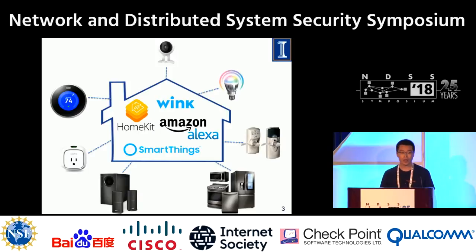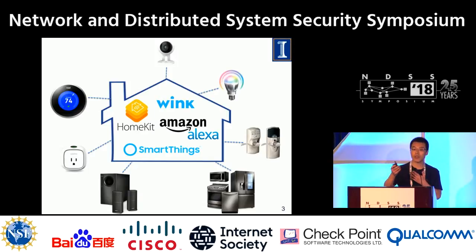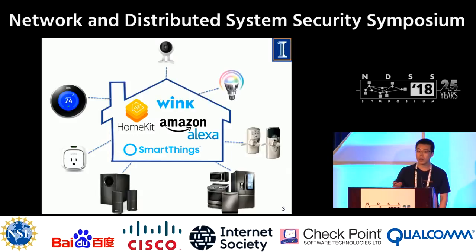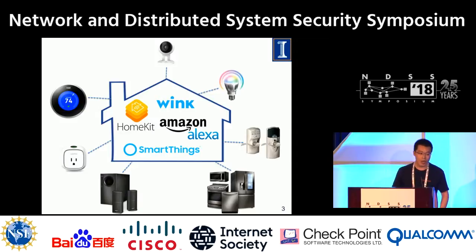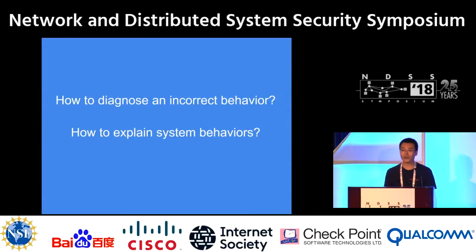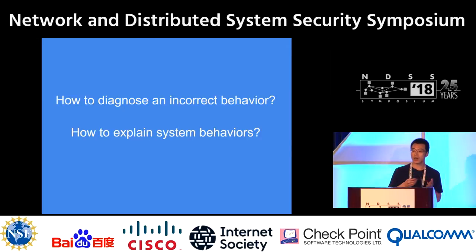For example, when we come home, the motion sensor detects our motion, then the camera at the door identifies our faces and opens the door for us. When the door is opened, the lights turn on, the thermostat adjusts to a good temperature, and maybe the TV is also turned on. It sounds amazing, right? But the problem is how to identify or diagnose incorrect behavior if something goes wrong.